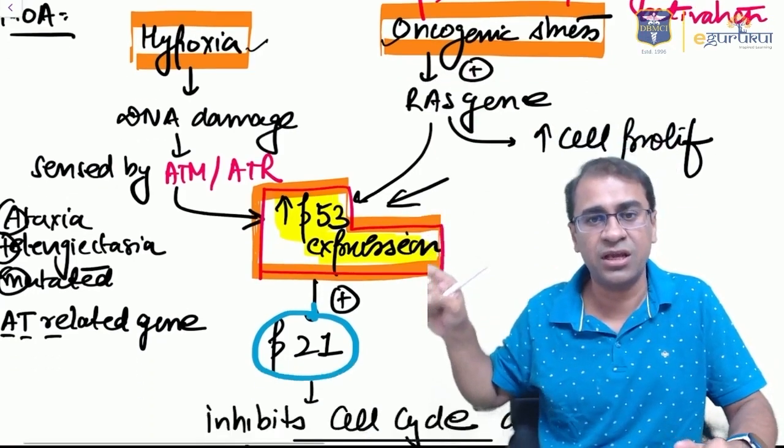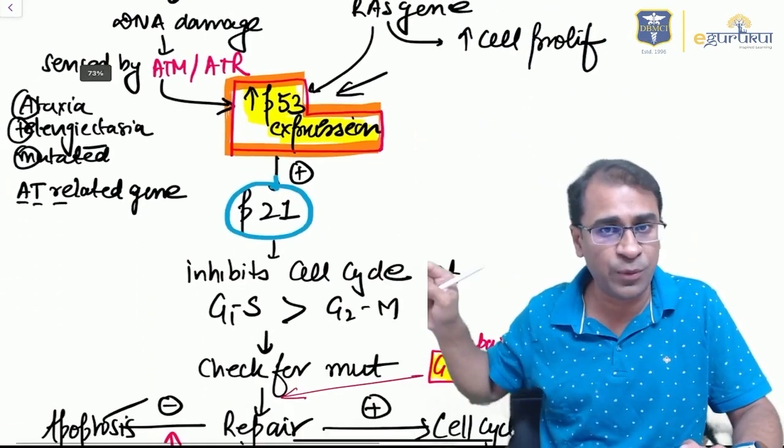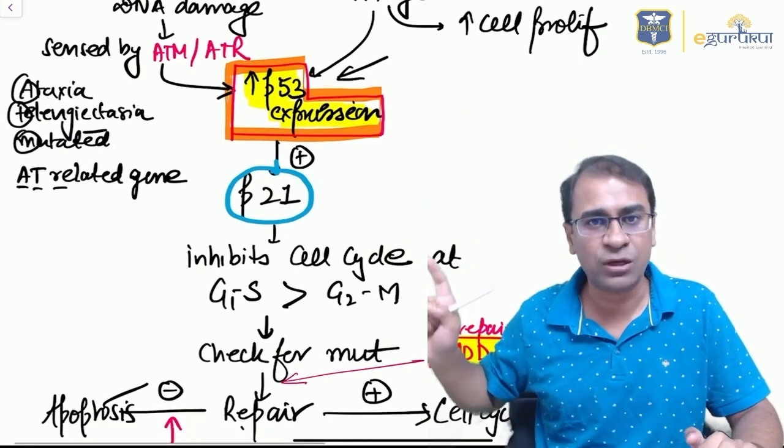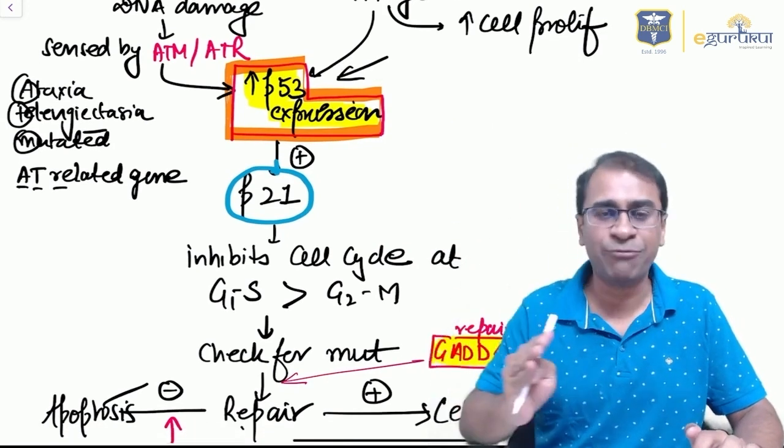This activates p53 expression. P53 will activate p21, and I hope you remember from CIP/KIP that p21 inhibits at G1-S and G2-M. That's how the cell cycle stops, repairs, and if possible, will cause apoptosis.